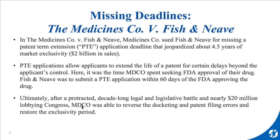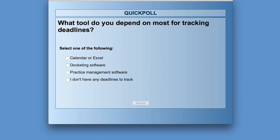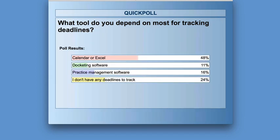Let's take a quick poll to get a sense of how attendees are managing their deadlines. What tools do you depend on most to track deadlines — Calendar or Excel, professional docketing software, practice management software, or not applicable? The results: the majority, 48%, said Calendar or Excel; 11% say docketing software; 16% say practice management software; and 24% say they don't have any deadlines to track.